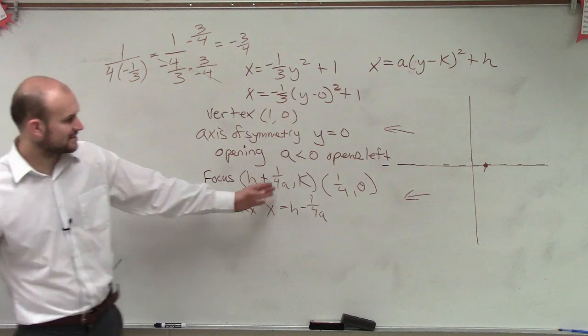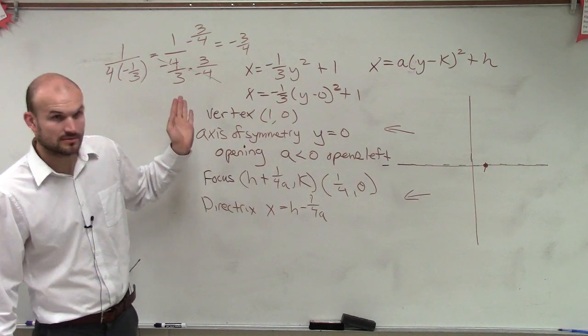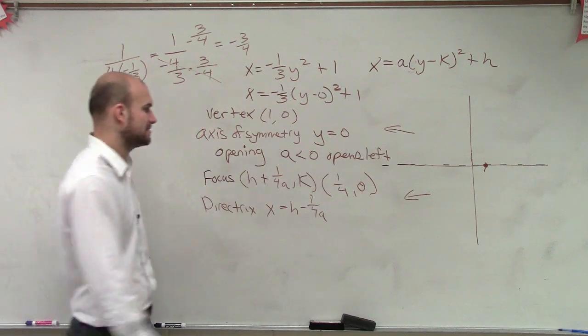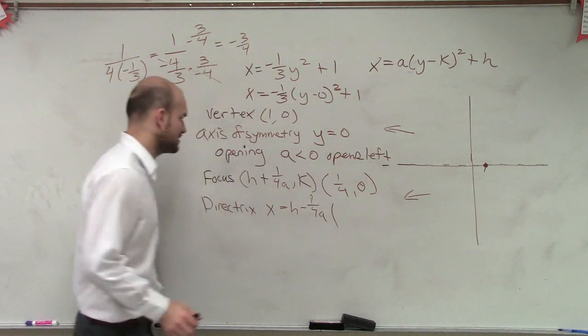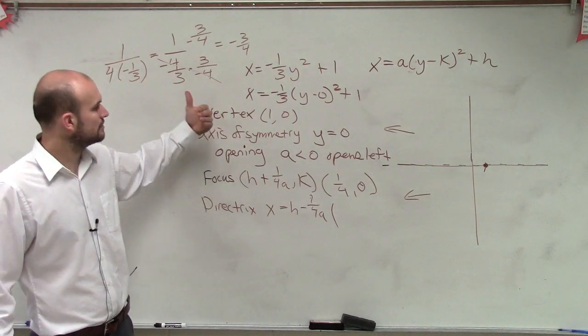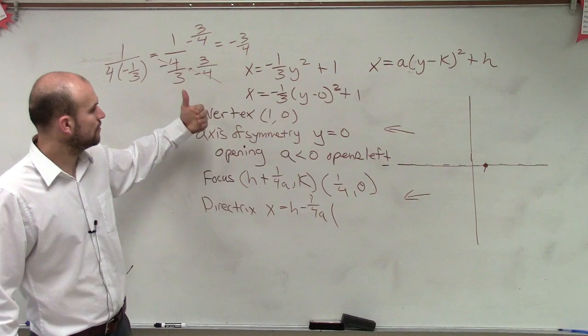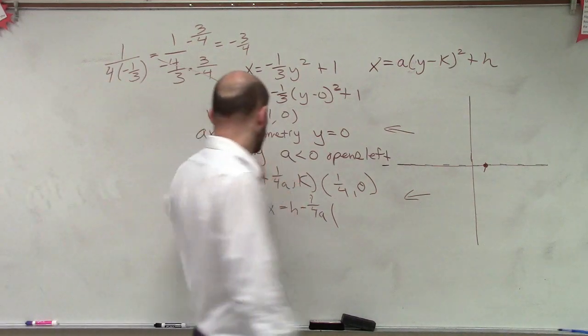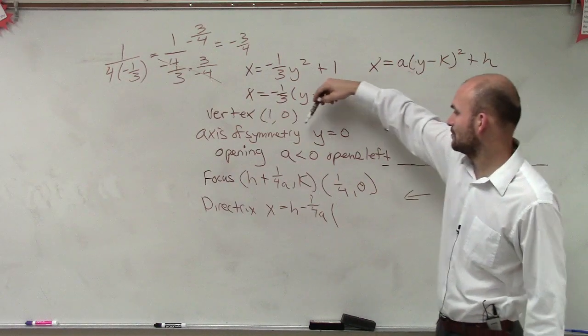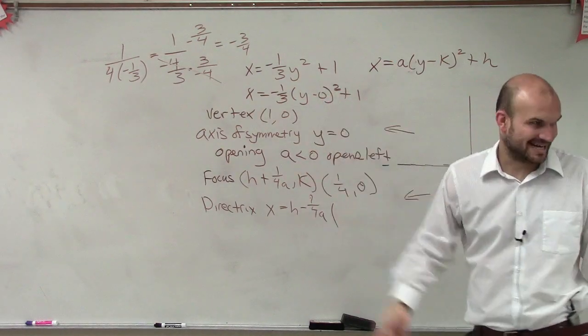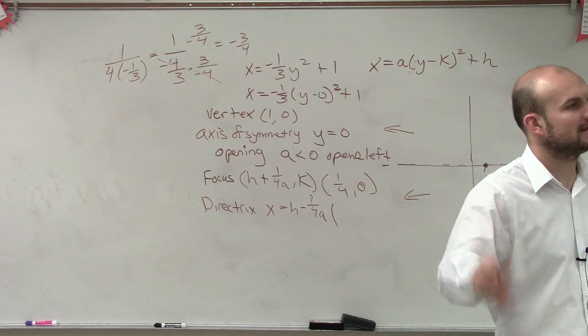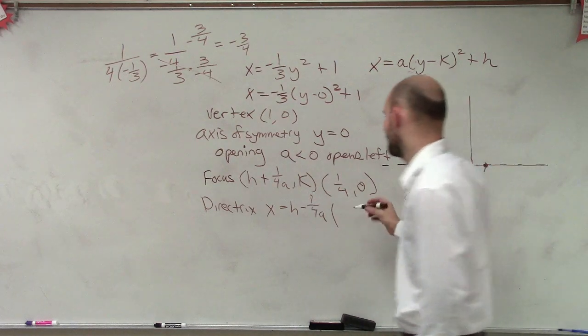And my directrix is going to be 1 minus 3 fourths. Yes? 1 minus 3 fourths. Yes? So, oh, no, no, I'm sorry. So it's, I'm sorry, 1 minus, yeah. 1 minus, hold on. How am I saying this? This is a negative 3 fourths. So you have 1 minus a negative, there we go. 1 minus a negative 3 fourths, which would be 1 plus 3 fourths, right? Right? Which would be 11 fourths.